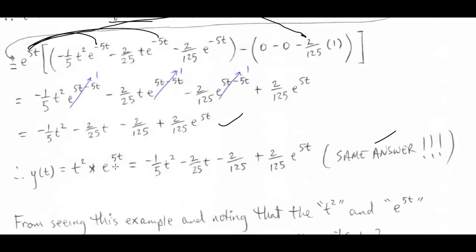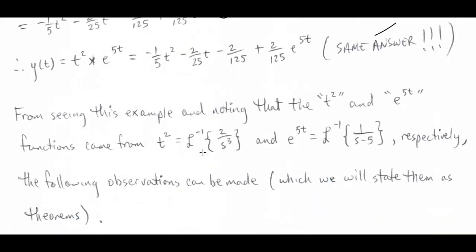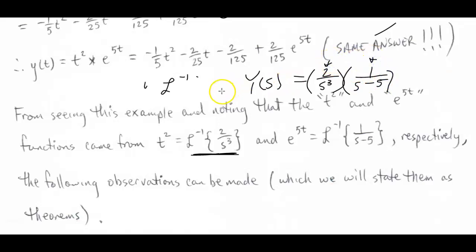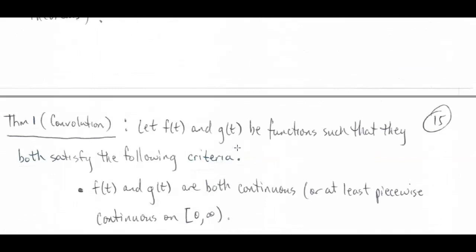We see the result we get is the same as what we got when solving by first order linear methods or method of undetermined coefficients. So convolving these two functions together works to get the actual solution to the first order ODE. We note that t squared and e raised to the 5t came from taking the inverse Laplace transform of 2/s³ and 1/(s−5) respectively — which came from factoring the Laplace transform of our equation and taking the inverse Laplace transform of each factor.